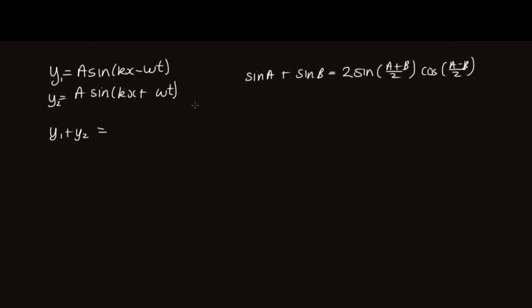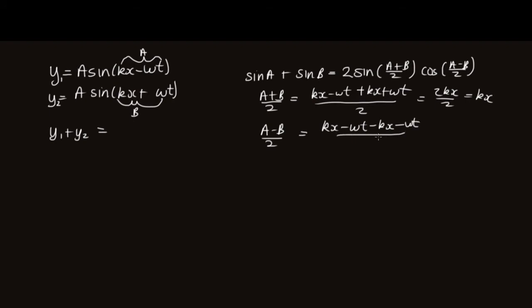So in this case this a out the front is the amplitude, it's not the same as the a in here. So we can say a plus b over two equals kx minus omega t plus kx plus omega t over two, which simplifies to kx minus omega t over two.